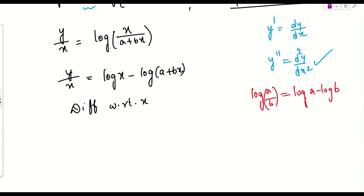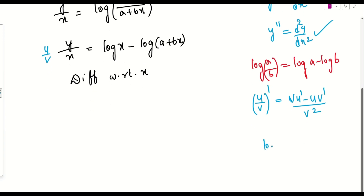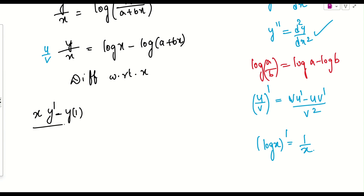Now differentiate both sides with respect to x. The left side y/x is in the form u/v, so we apply the quotient rule: (v·u' − u·v') / v². We also know that the derivative of log x is 1/x. Applying the quotient rule to y/x gives: (x·y' − y) / x².